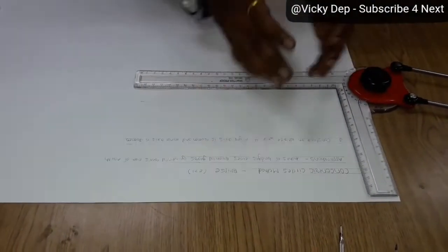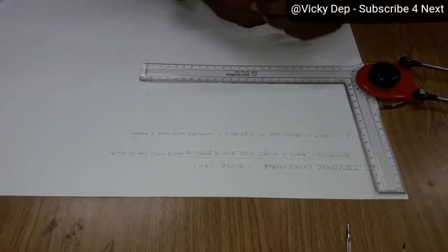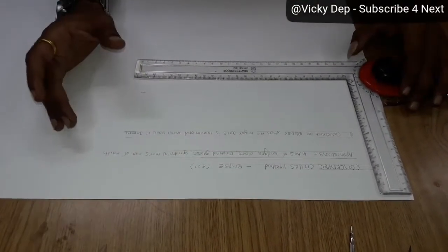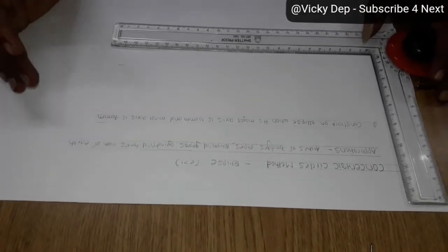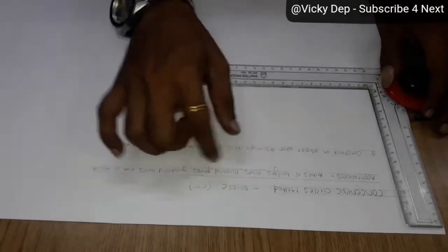They are like arches of bridges, pipes, elliptical gears, cylindrical tanks and the path of earth. In so many things you can see the shape of ellipse.